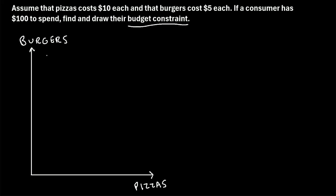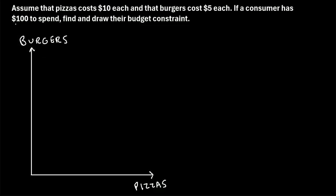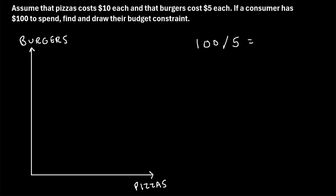To draw our budget constraint, we first ask ourselves: if we only bought one good — say, only burgers — how many burgers could we buy? If we have $100 to spend and a burger costs $5, then the number of burgers we could buy is simply 100 divided by 5, which is 20. So let's put a point here and label it 20.